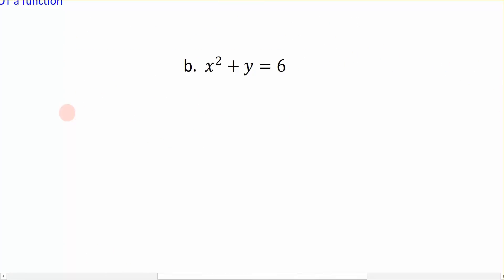Let's look at this example. x squared plus y equals 6. To solve the equation for y, I'm going to subtract x squared to the right hand side, and I end up with y equals 6 minus x squared. There is only one value for y once I solve it, and this would also be considered a function.